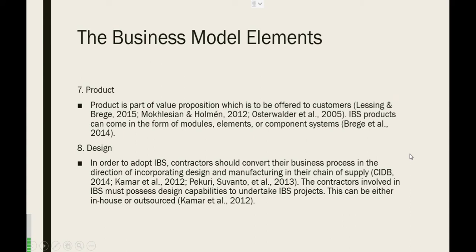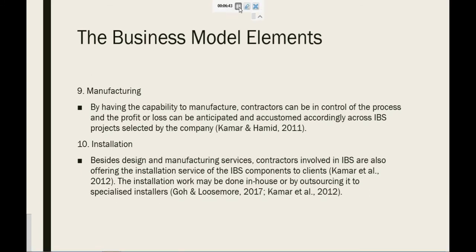Next is product. Product is part of the value proposition which is to be offered to customers. IBS products can come in the form of modules, elements, or component systems. Next is design. In order to adopt IBS, contractors should convert their business process in the direction of incorporating design and manufacturing in their chain of supply. The contractor involved in IBS must possess design capabilities to undertake IBS projects. This can be either in-house or outsourced.